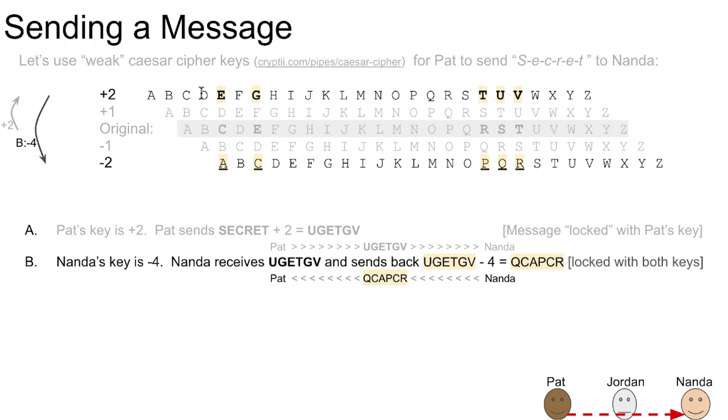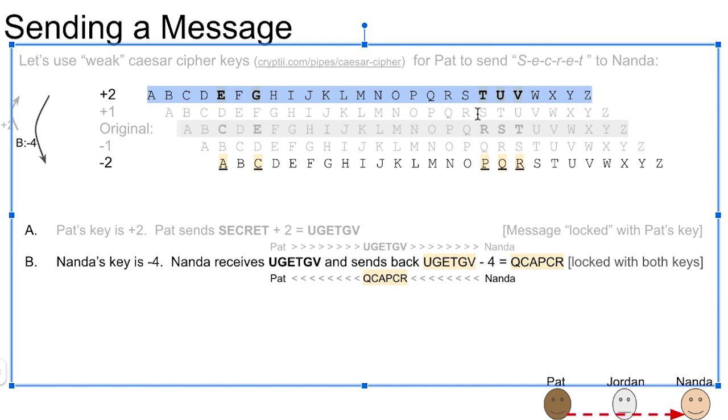So we have, so U-G-E-T-G-E-V is represented up here on the top row. So minus four, we go down four levels, and now the U becomes Q, and the G becomes C, and so forth. So those letters become now U-G-E-T-G-E-V. Minus four becomes Q-C-A-P-C-R, Q-CAP-C-R. So now it's locked with both keys, with the plus two and the minus four. So Nanda sends back to Pat, Q-CAP-C-R across the line.